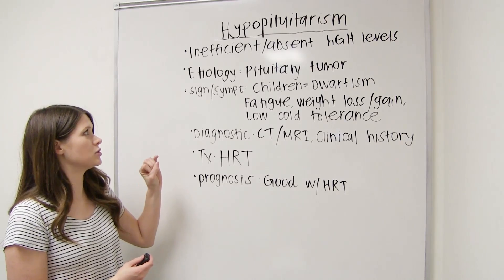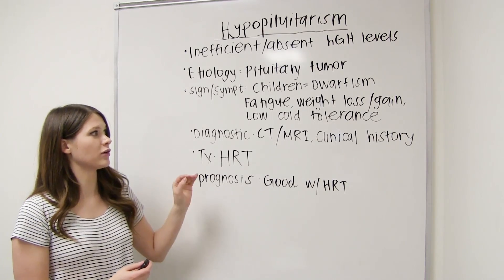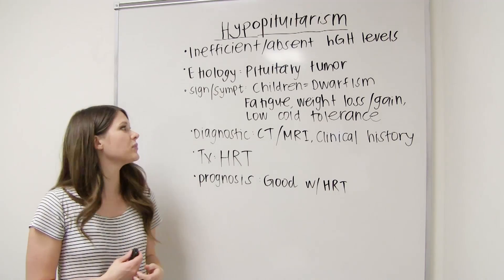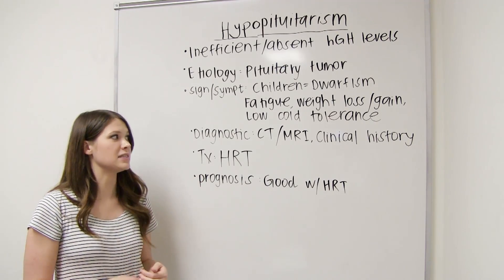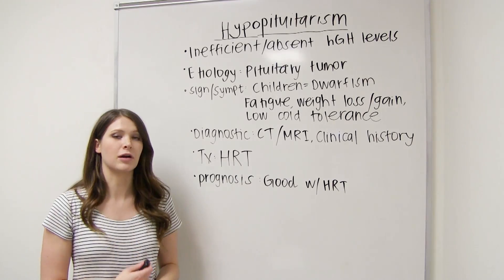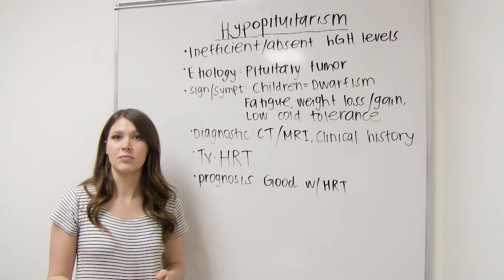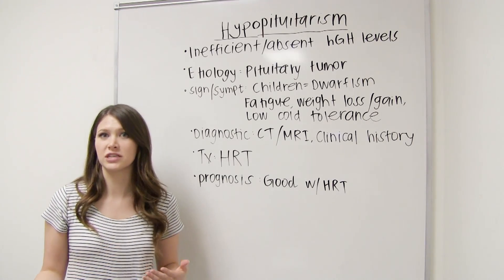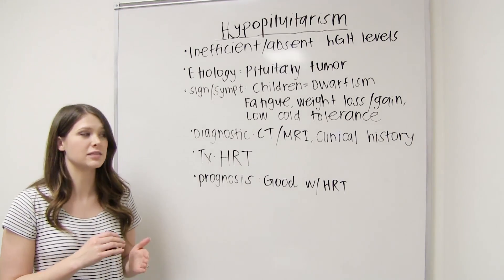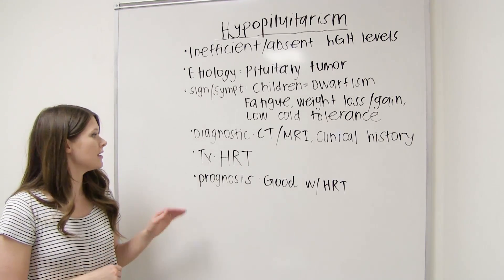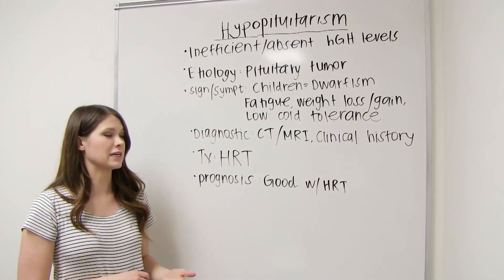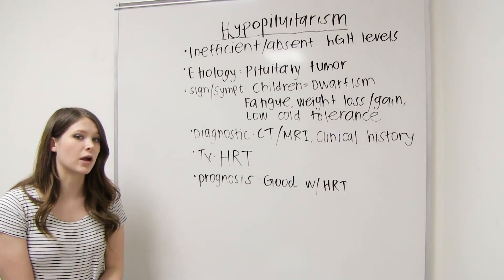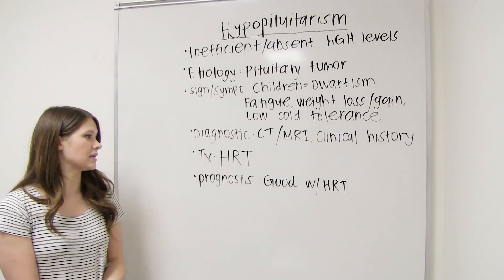The adult pituitary dwarf will also grow proportionally. The diagnostic procedure includes a CT scan or an MRI, and clinicians will also look at the clinical history to assess symptoms. The treatment will be hormone replacement therapy.